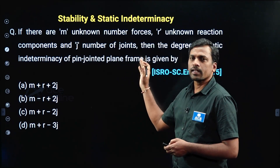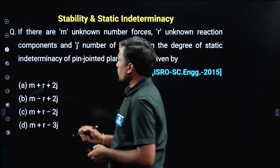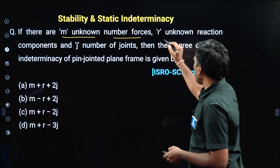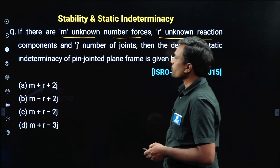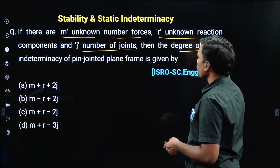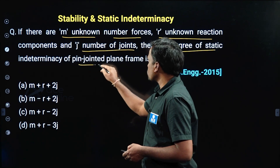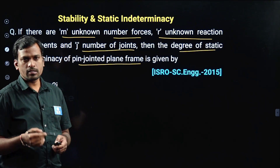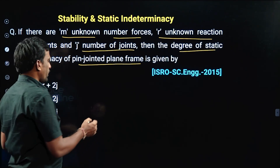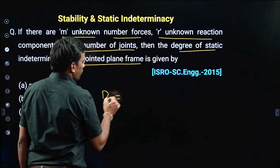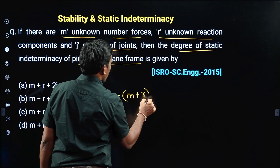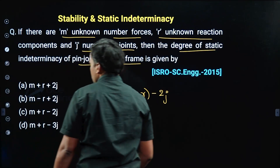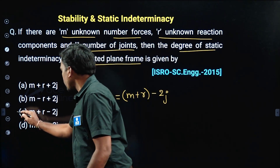This is the first question from the Static Indeterminacy chapter. Given: M is the unknown number of forces, R is the unknown reactions, J is the number of joints. Then the degree of static indeterminacy of a pin jointed plane frame — the formula is DS equals M plus R minus 2J. So option C is correct.